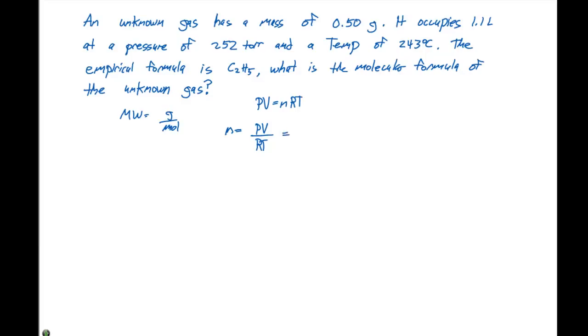Now remember, our value for R is 0.0821 liter-atmospheres per mole-Kelvin. So all of our units, in order to cancel out everything, we need our volume in liters, our pressure in atmospheres, and our temperature in Kelvin. Our pressure is given in 252 torr.